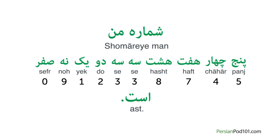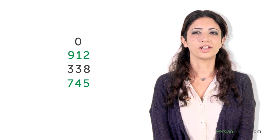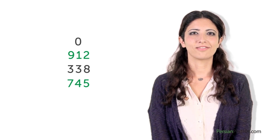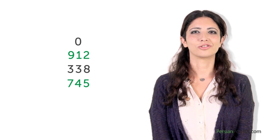Perfect. Now it's time for Anita's advice. You can give your phone number digit by digit, but be careful — it's more common to group the numbers in Persian. For example, this phone number would probably be read as zero, nine hundred and twelve, three hundred and thirty-eight, seven hundred and forty-five. This makes them shorter to say and easier to remember. But how do you say numbers above ten? In the next lesson, we're going to learn just that.